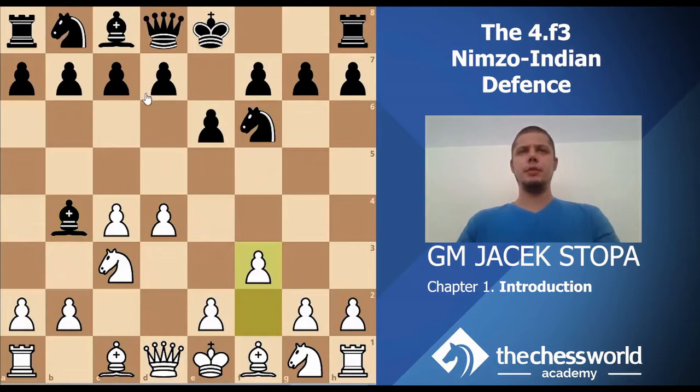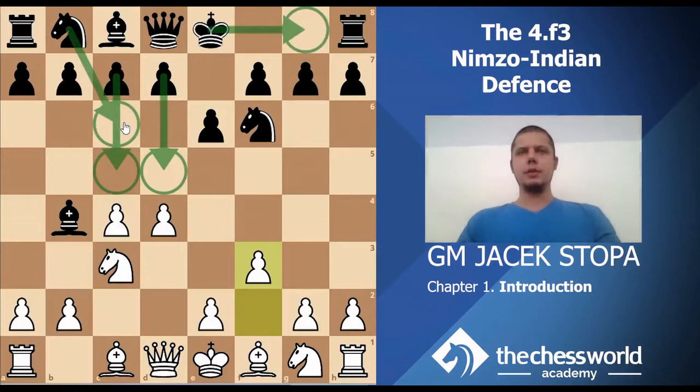There are basically two or three main options for Black here. D5 and c5 are the most popular ones, but there's also castles and knight c6. We will be looking at all of them in turn, with some focus on theory, latest developments, and some practical games.